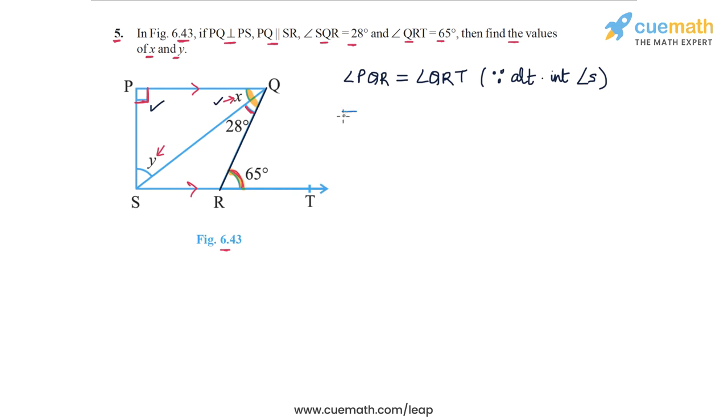So this means that now what is PQR? PQR, this whole angle, is actually the sum of two angles: it is the sum of x and 28 degrees. So PQR can be written as x plus 28 degrees.